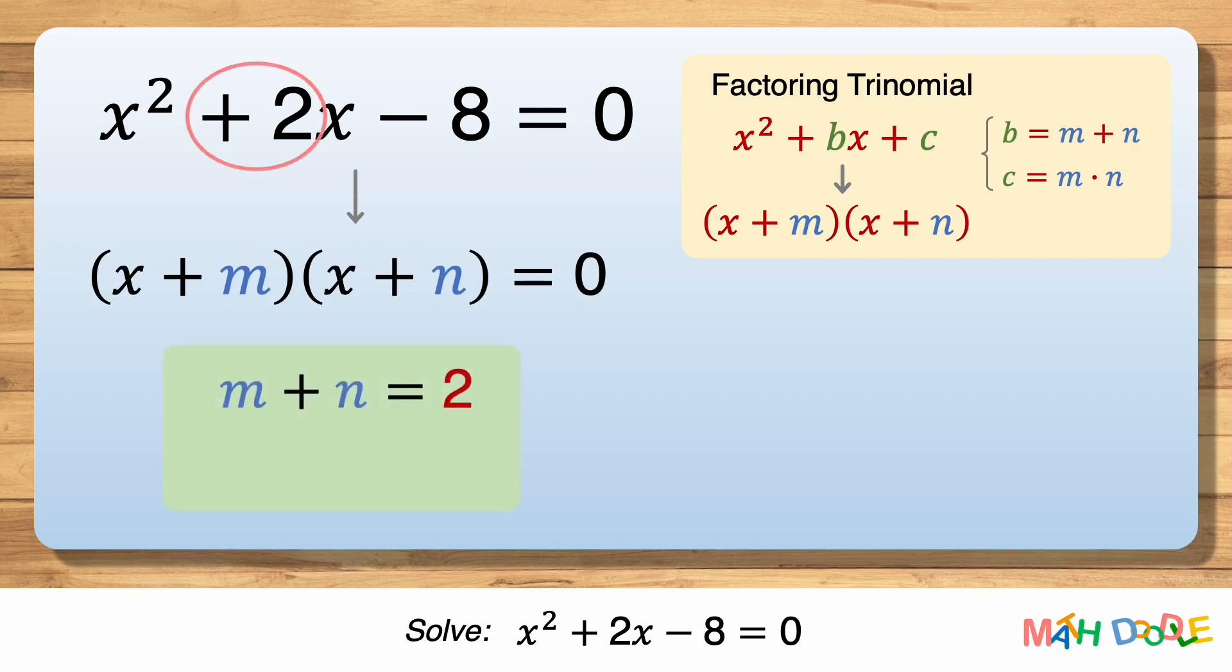But we know m plus n is 2, and m times n is minus 8. So, our goal is to find two numbers that add to 2 and multiply to minus 8.